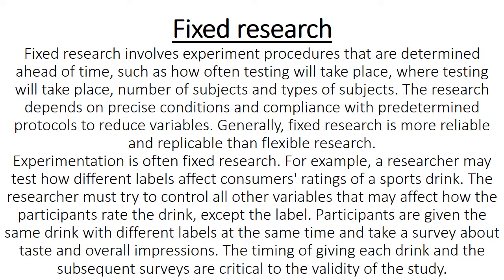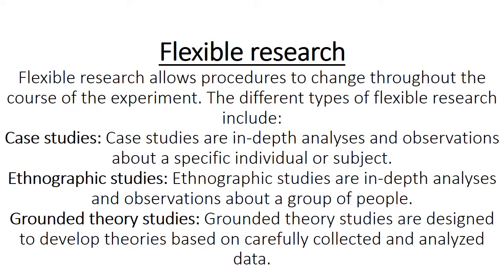Experimentation is often fixed research. For example, a researcher may test how different levels affect consumers' ratings of a sports drink. The researcher must try to control all other variables that may affect how participants rate the drink. Participants are given the same drink with different levels at the same time and take a survey about taste and overall impressions. The timing of giving each drink and the subsequent surveys are critical to the validity of the study.